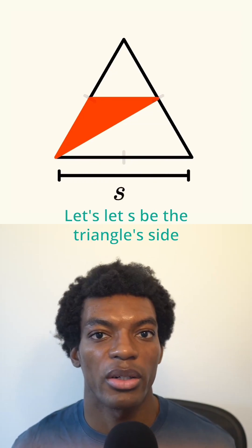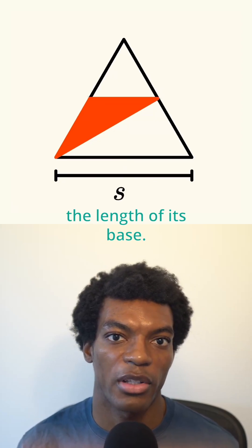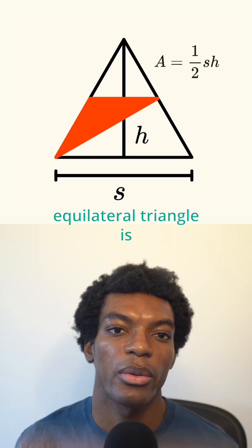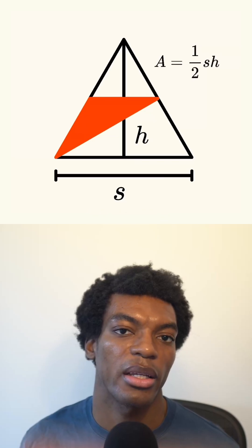Let's let S be the triangle's side length, which is also the length of its base. Then we'll let the height of the triangle be H, so we can say the area of the equilateral triangle is 1 half times S times H.